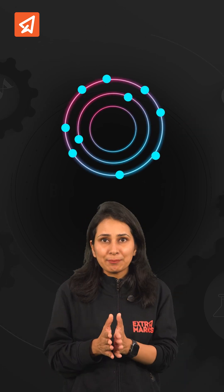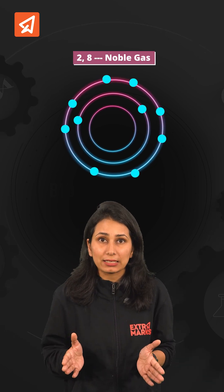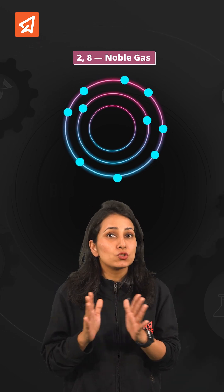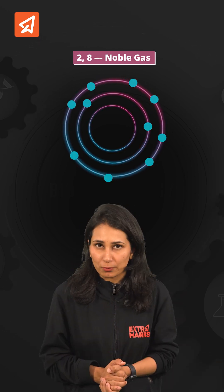In the second element, there are ten protons and the electronic configuration is 2,8. It is a noble gas. Hence, no ion is formed.